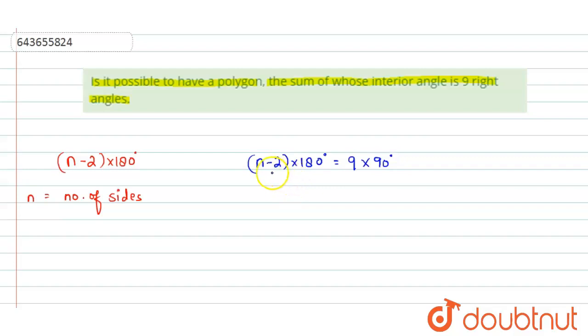Now from this equation, if the value of n comes out to be a natural number, then we can say that it is possible to have a polygon like this. But if the value of n is not a natural number, then the polygon will not be possible, because n can only take the natural number value, because n is equal to number of sides only, right.